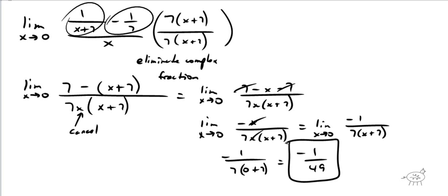If I actually graphed this in my graphing calculator and typed in values really close to zero — like positive or negative 0.0001 — I would get really, really close to negative one over forty-nine. If I type in exactly zero, I'd get undefined. But from both sides we can see the limit approaches negative one forty-ninth. So that's one kind of problem with fractions — make sure you know how to do that.